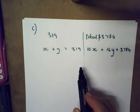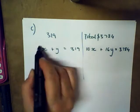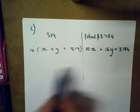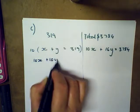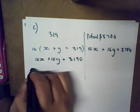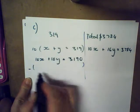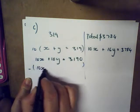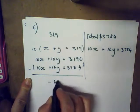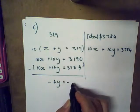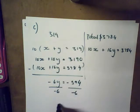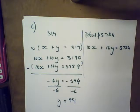I've got two equations with two unknowns and we can solve simultaneously. Since I only have x in the first equation, I multiply it by 10 to get 10x plus 10y equals 3190. Subtracting from the second equation: 10x plus 16y equals 3784 minus 10x plus 10y equals 3190 gives negative 6y equals negative 594. Dividing by negative 6 gives y equals 99.